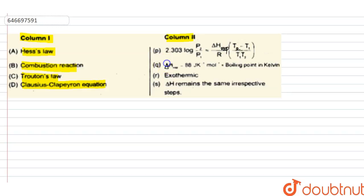Delta H is equal to 88 Joule per Kelvin per mole boiling point in Kelvin. Exothermic. Delta H remains the same irrespective of the steps.